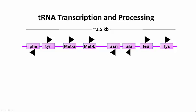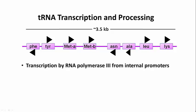Let's look at transfer RNA genes and their transcription and processing. Transfer RNAs themselves are very short RNAs, less than 100 nucleotides in length. Transfer RNA genes are also dispersed on different chromosomes in eukaryotes, though they can often be found in clusters as shown here.